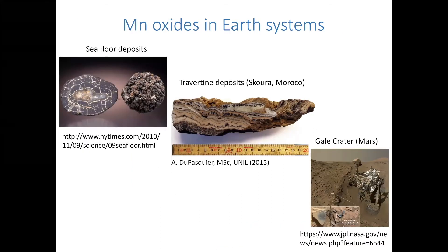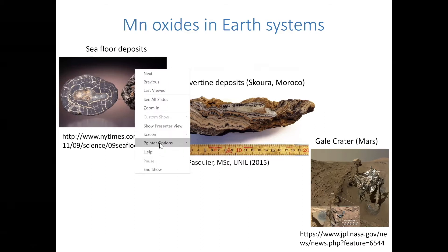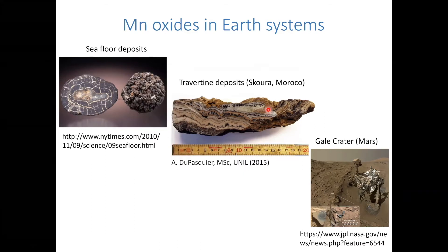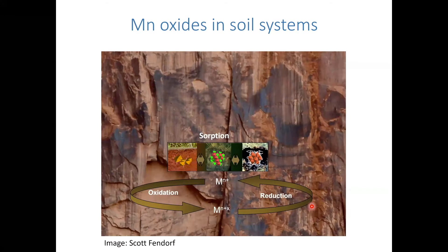I'll show you some images. Here you see manganese oxides in a nodule, in travertine deposits, and manganese oxides have been identified on Mars. Here's a nice slide showing the importance of manganese oxides in regulating the speciation and fate of a range of important environmentally relevant trace metals and contaminants.